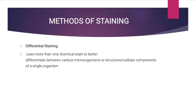Gram staining uses two dyes — crystal violet and fuchsin or safranine — to differentiate between gram-positive bacteria, which have a large peptidoglycan layer on the outer surface of the cell, and gram-negative bacteria. This method uses more than one chemical stain to better differentiate between various microorganisms, structures, or cellular components of a single organism. The differential staining thus differentiates gram-positive bacteria from gram-negative bacteria.